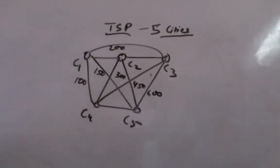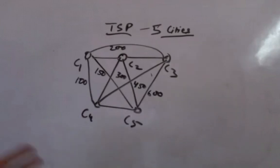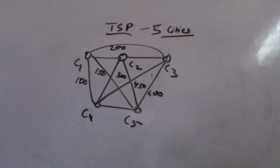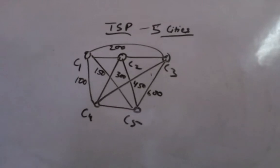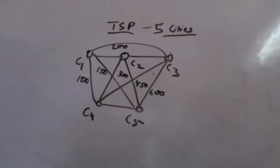To summarize: we have covered what we mean by data structures, what different kinds of data structures are available, and what we will be going through in this subject. We will take up each and every data structure, do all the operations in the programming language showing how the data structure is implemented, how various operations can be performed, and see the application part as well.